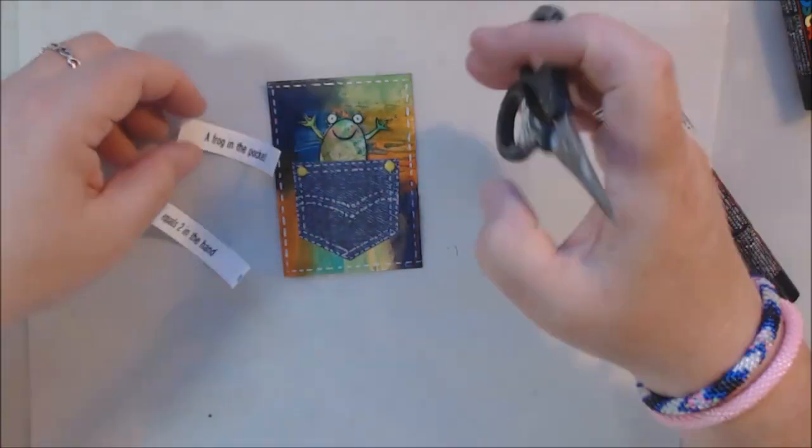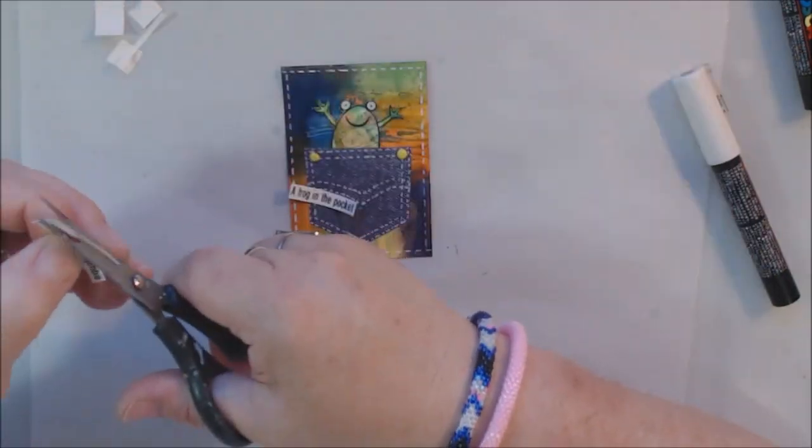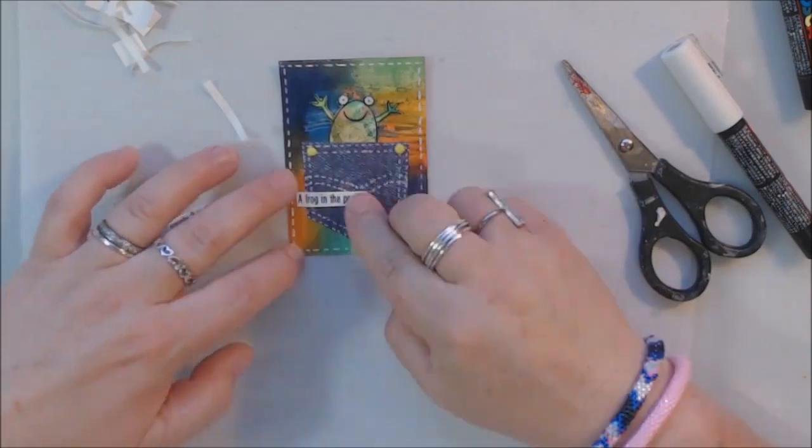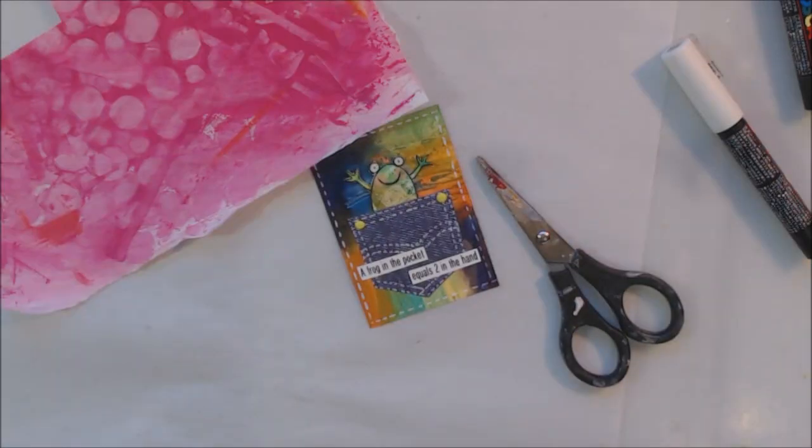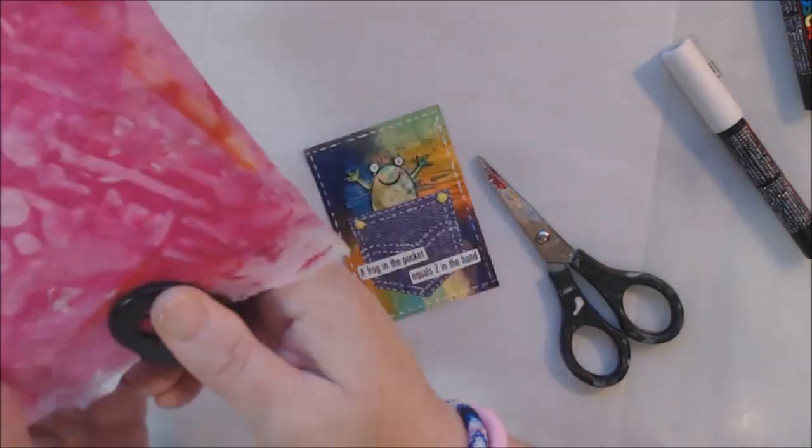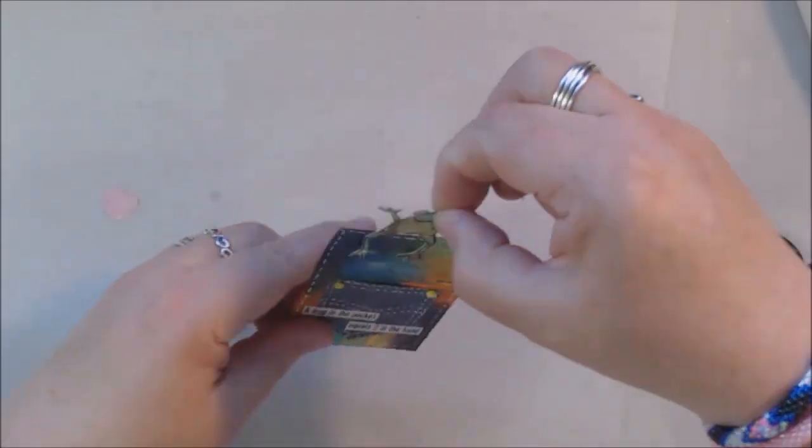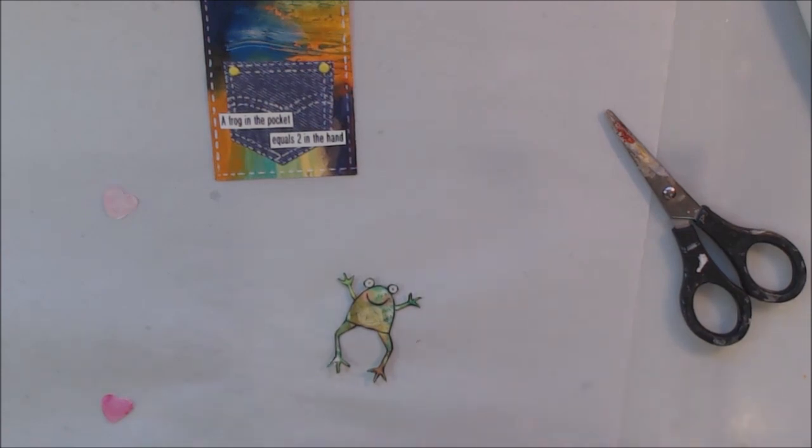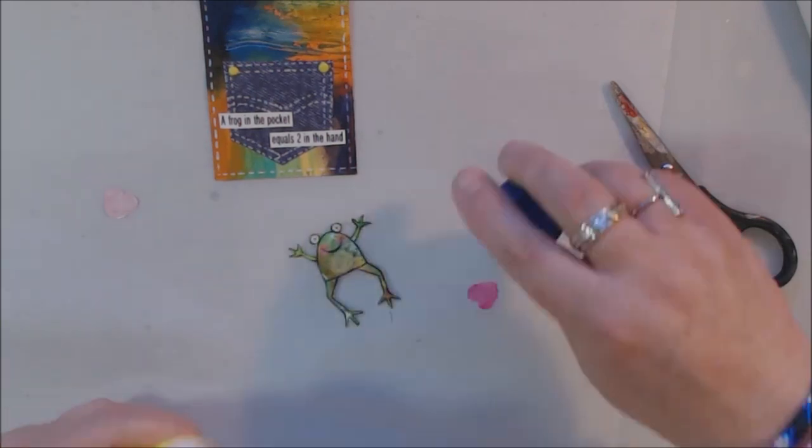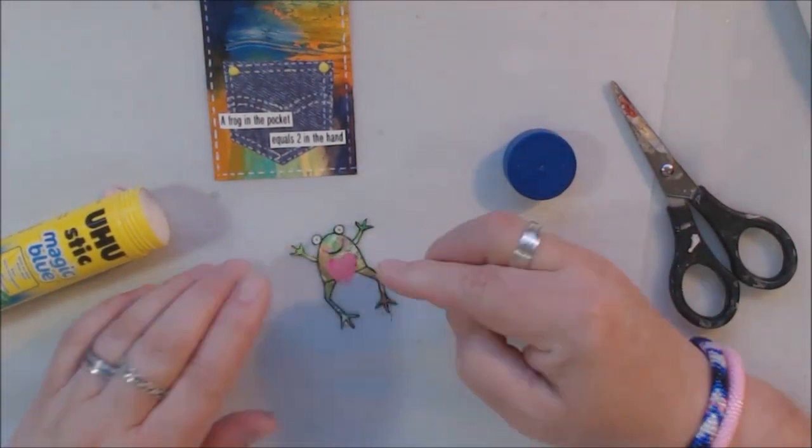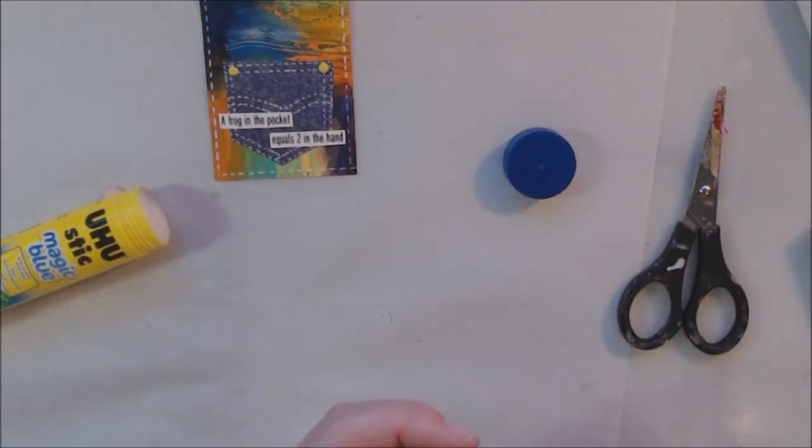When I put the glue on, I put it over the edges only and left the top open so it would be a true pocket. Then I wanted some words and decided to make a play on words of bird in the hand is better than two in the bush. Like a frog in the pocket equals two in the hand, I don't know. Then I thought it would be cute if the frog had a heart for a tummy and a heart for a butt.